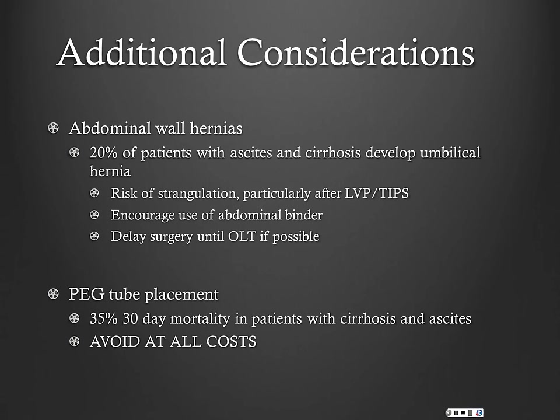Tell patients what signs and symptoms to look for with incarceration or strangulation, and encourage use of an abdominal binder. The treatment of choice is surgery, but you want to avoid that in patients with refractory ascites, as their Child-Pugh and MELD scores are high and they have high operative mortality. We usually try to hold these patients until they're listed and undergo transplantation, when surgeons can repair the hernia at the same time.